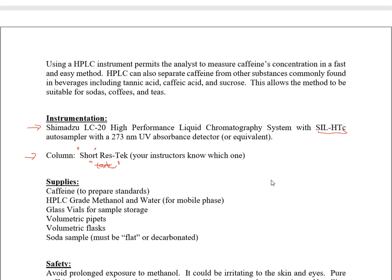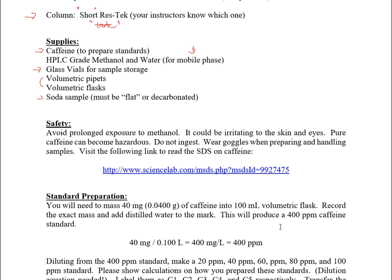For supplies, we need caffeine to make standards, methanol and water for the mobile phase to push the soda samples through the instrument, HPLC vials to load samples, and pipettes and flasks to make standards — including the quality control standard and calibration check standard. We also need a soda sample, and that soda sample has to be flat or decarbonated. If we have not done this for you, this is something you'll have to do on your own.